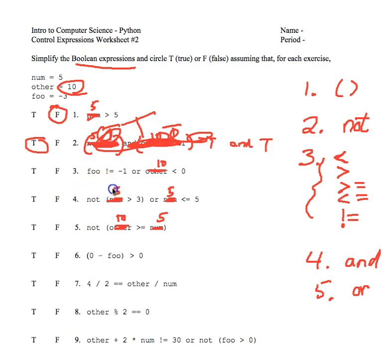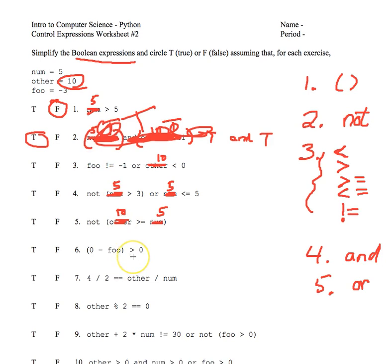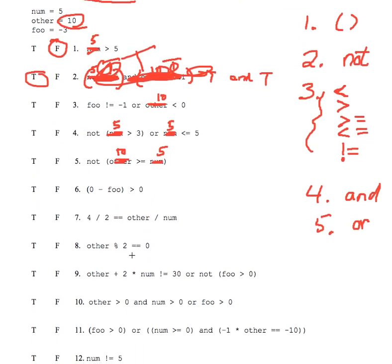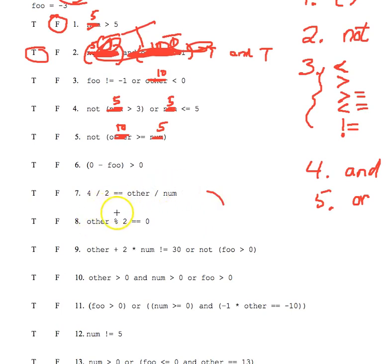Continuing now with some other tricky exercises on this worksheet, I'm going to skip down to number eight. Number eight, you plug in the number 10 for the variable named other. Then you have to remember what a percent symbol means in Python. What does a percent symbol do in Python? Good. It computes the remainder of something divided by something. So 10 divided by two yields a remainder of zero. So you're really asking in number eight, is the simplified number zero equal to zero? Well, that would be true.